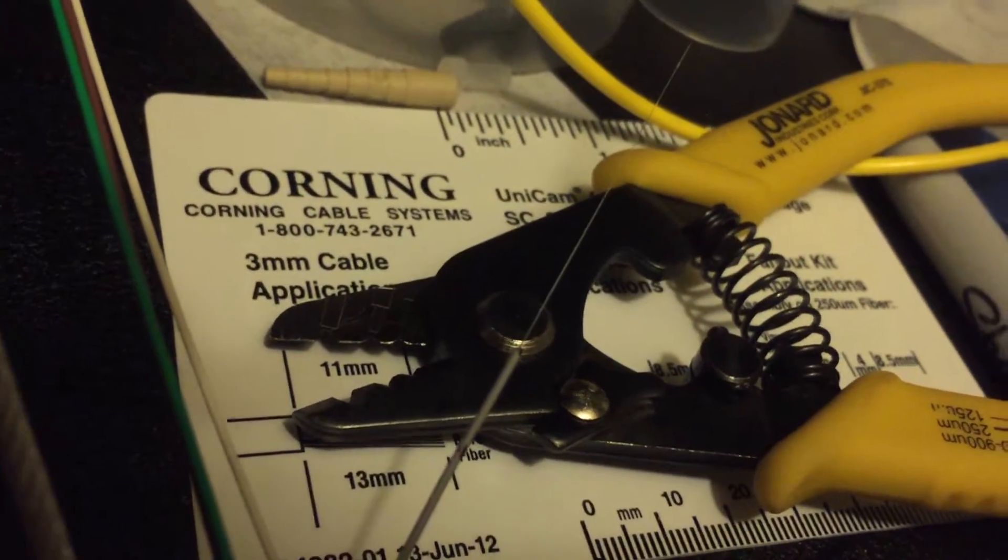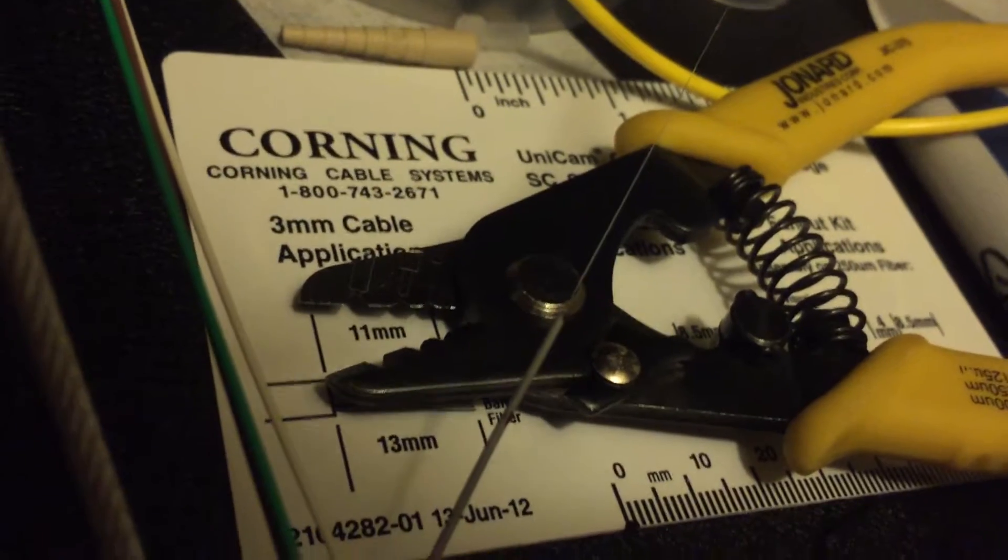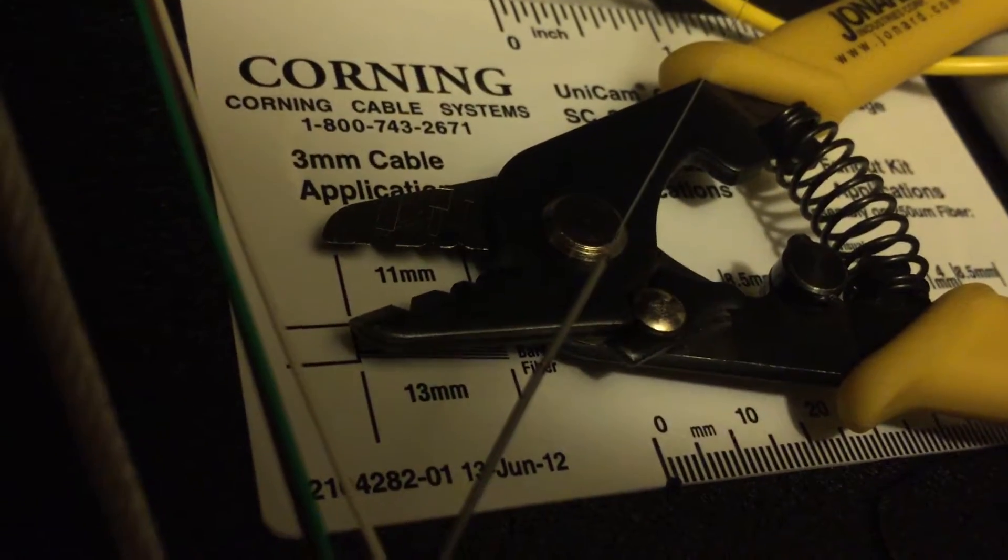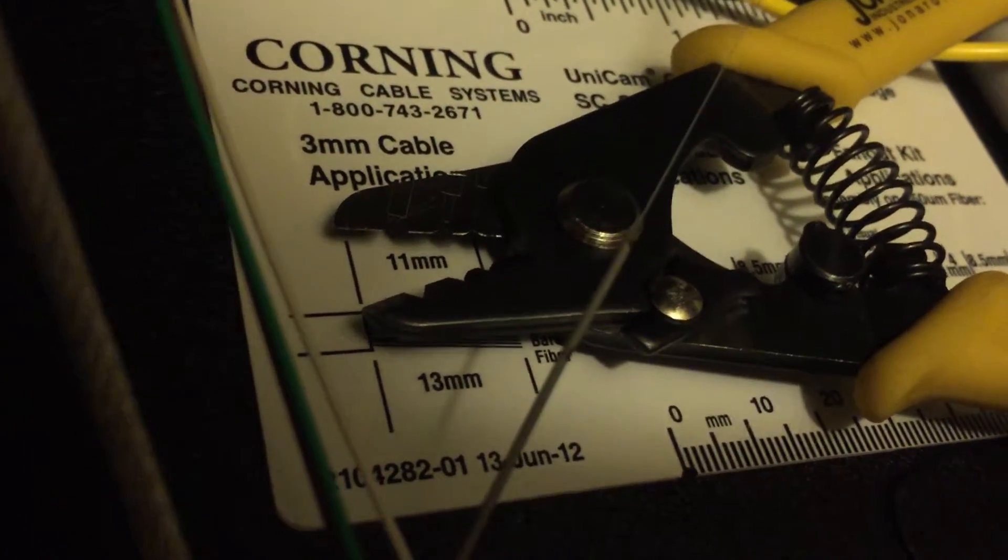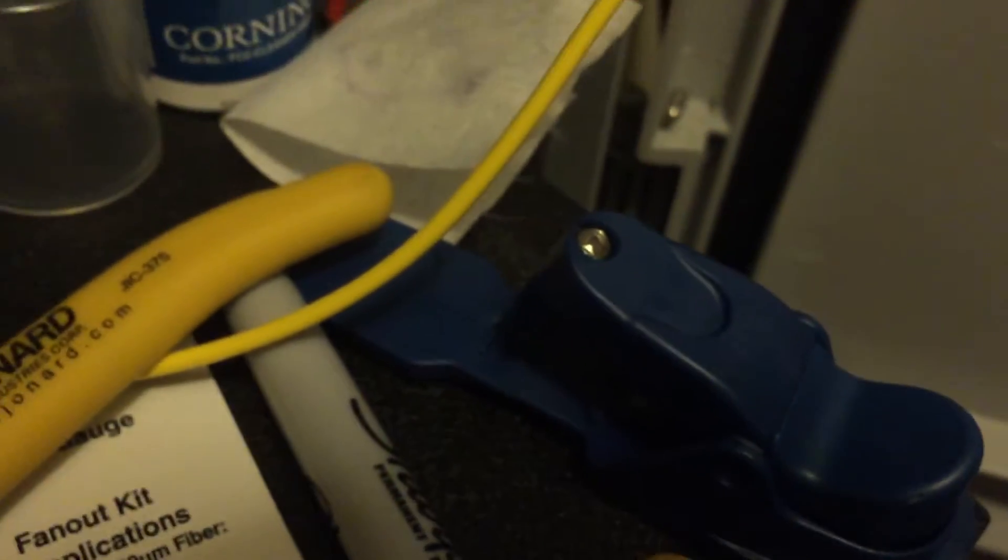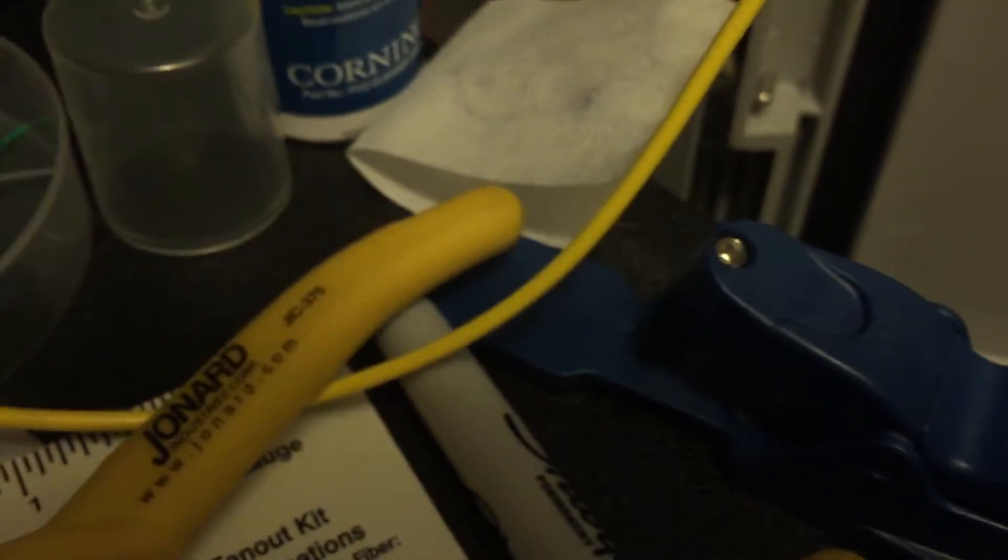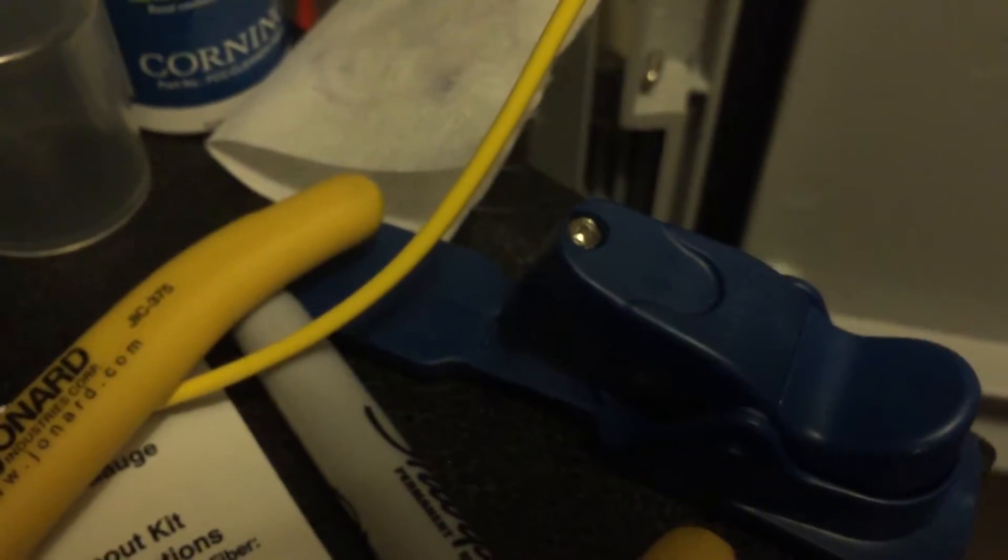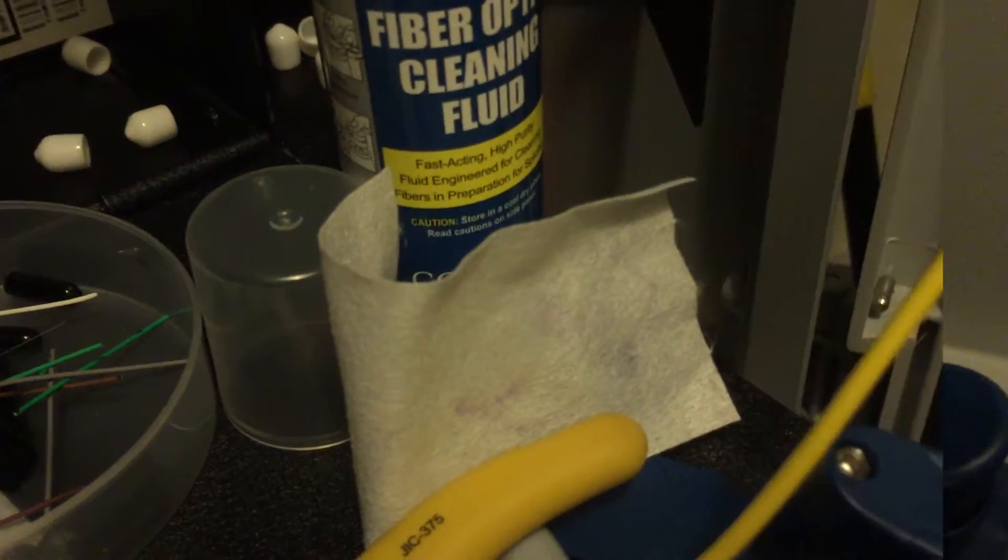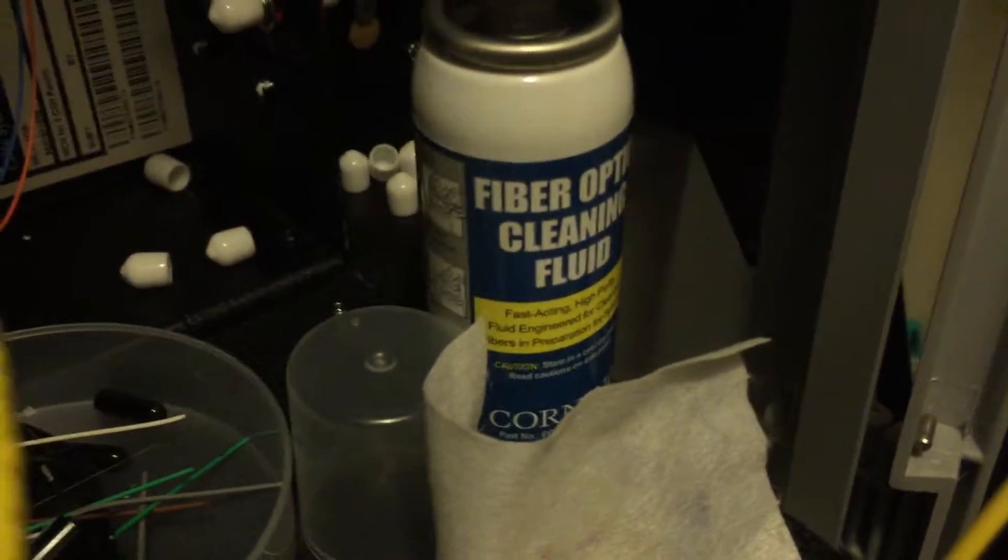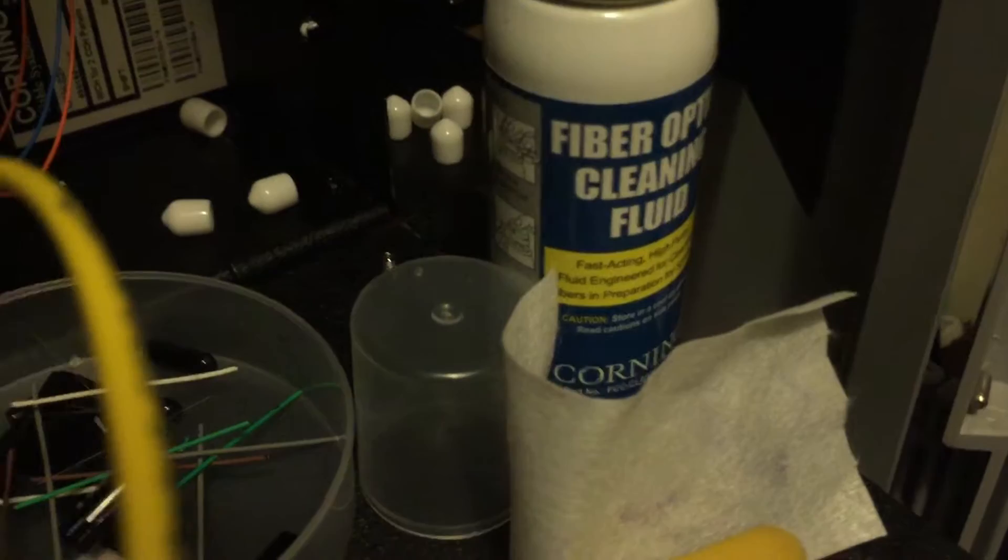If you can barely see it you've got it totally unsheathed and I went ahead and made an 11 millimeter mark which will help us later on. Now I'm going to use my cutter to get the right length to insert into the Unicam and just a reminder that you want to clean your exposed fiber optic before you make the cut.